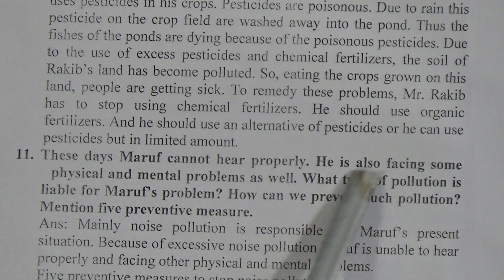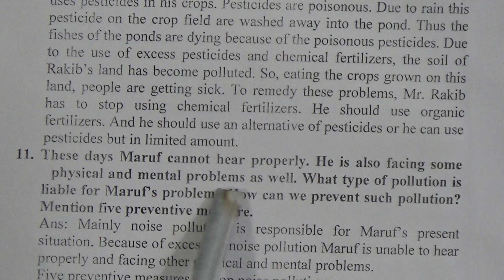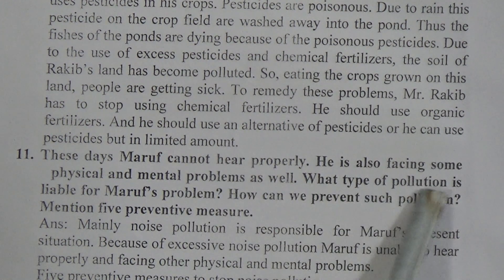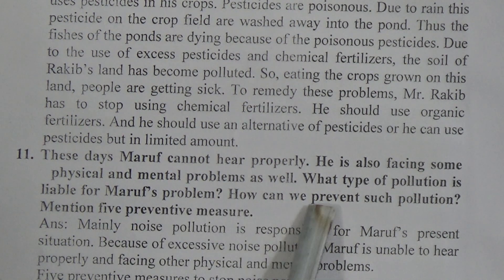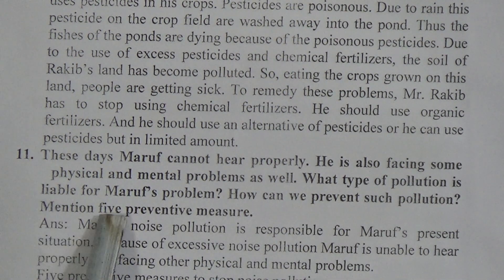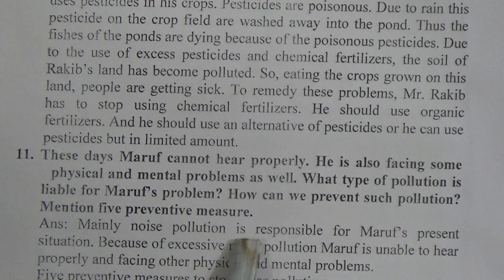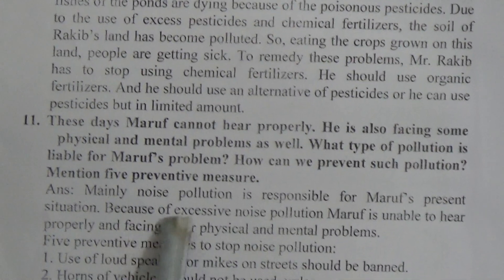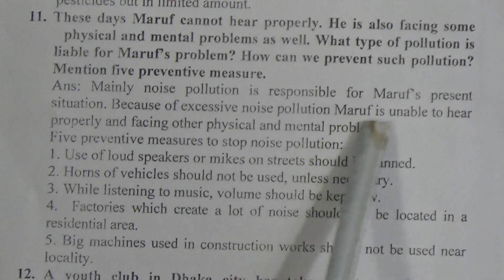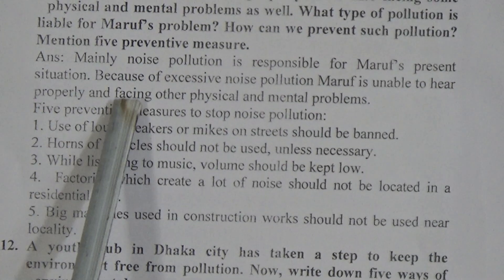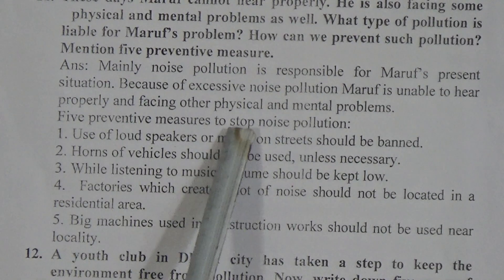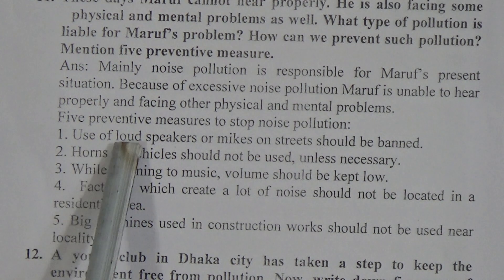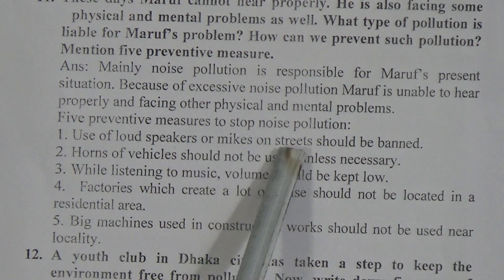Question 11: These days Maruf cannot hear properly. He is also facing some physical and mental problems. What type of pollution is liable for Maruf's problems and how can we prevent such pollution? Mention five preventive measures. The answer is: mainly noise pollution is responsible for Maruf's present situation. Because of excessive noise pollution, Maruf is unable to hear properly and is facing other physical and mental problems. Five preventive measures to stop noise pollution — first: use of loudspeakers or mics on streets should be banned.